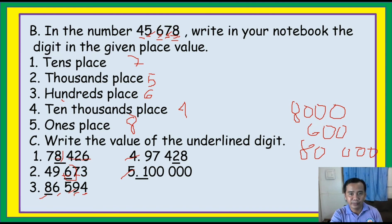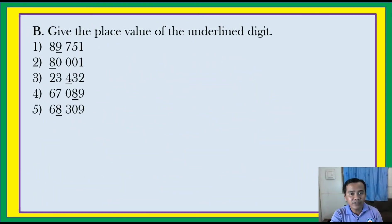Give the place value of the underlined digit. Number one: ones, tens, hundreds, thousands — thousands. Number two: ones, tens, hundreds, thousands. Number three: ones, tens — tens. Number four: ones, tens, hundreds, thousands — thousands.